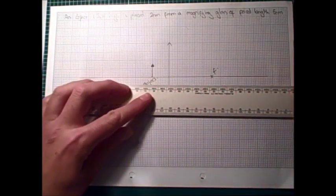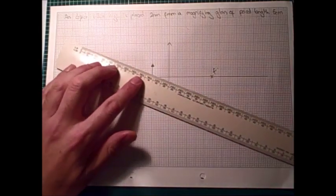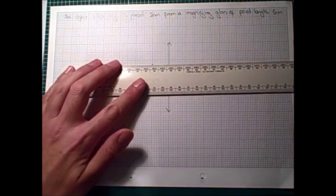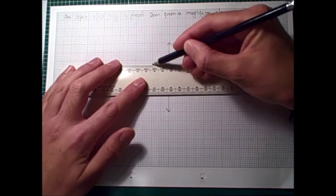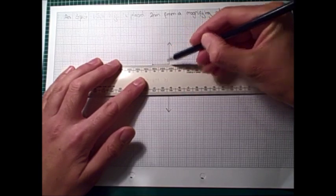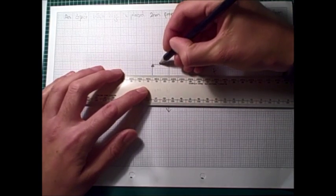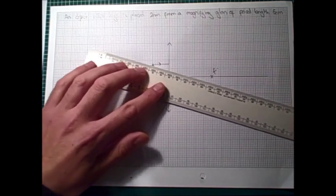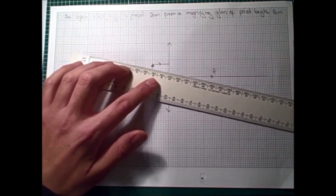Now, much as before, we have two special rays to draw in. We draw a ray parallel to the principal axis from the top of our object. And that will refract through the focus.